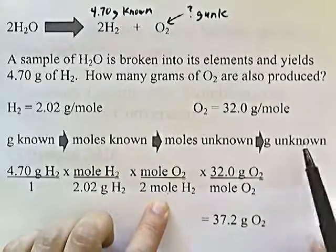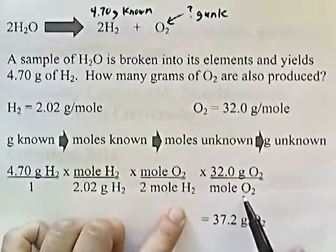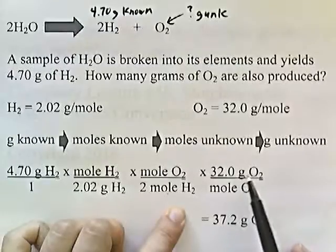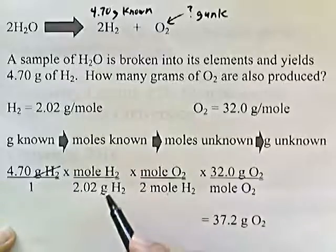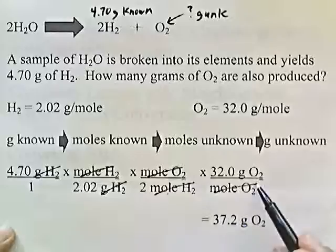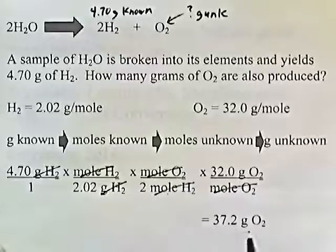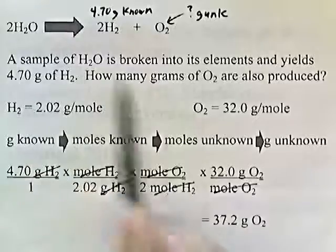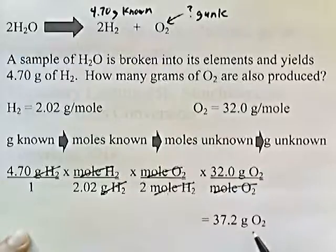From moles of unknown to grams of unknown: moles of O₂ on the bottom and 32 grams of O₂ on top, since one mole of O₂ weighs 32 grams. Grams of H₂ cancel, moles of H₂ cancel, moles of O₂ cancel, and you're left with grams of O₂. 4.7 times 32 divided by the bottom numbers gives 37.2 grams of O₂. So if you decompose water and get 4.7 grams of hydrogen gas, 37.2 grams of oxygen are produced along with it.